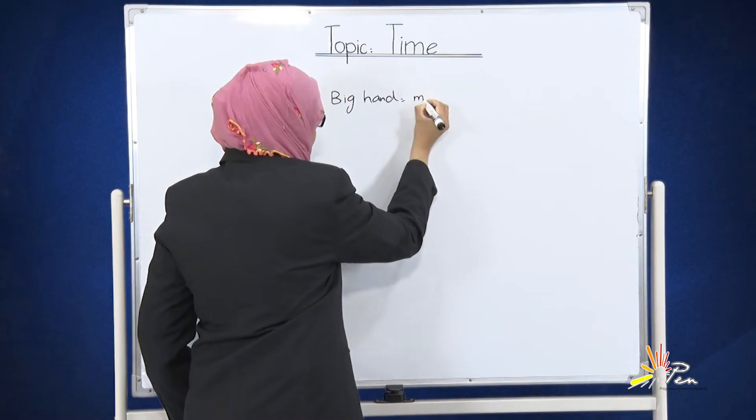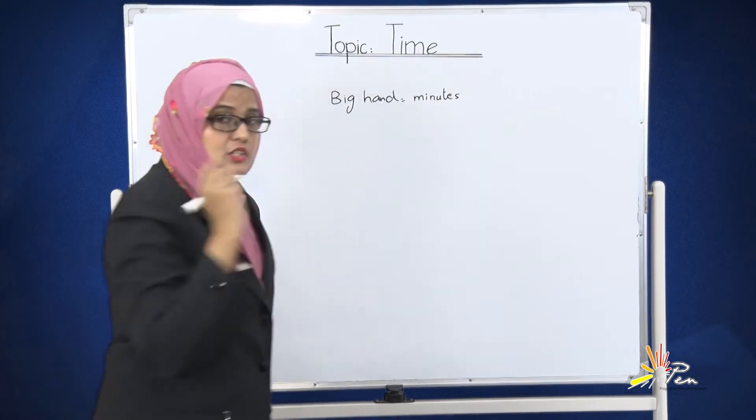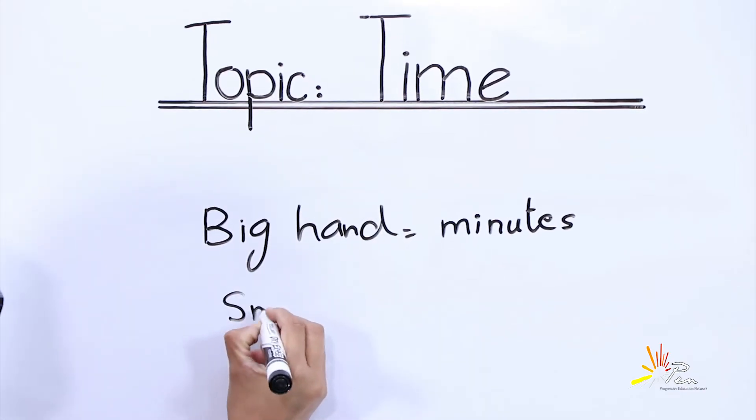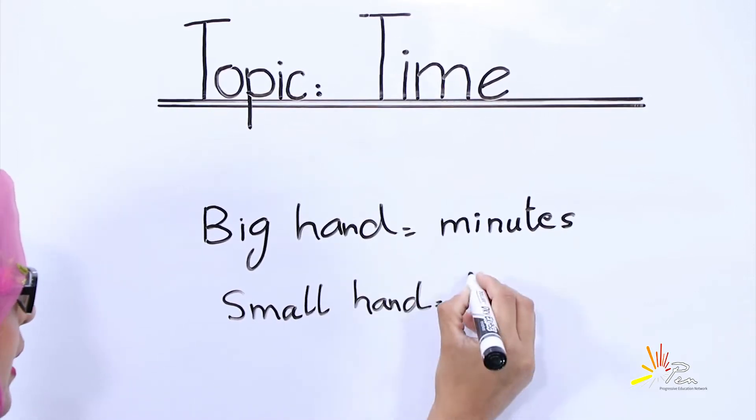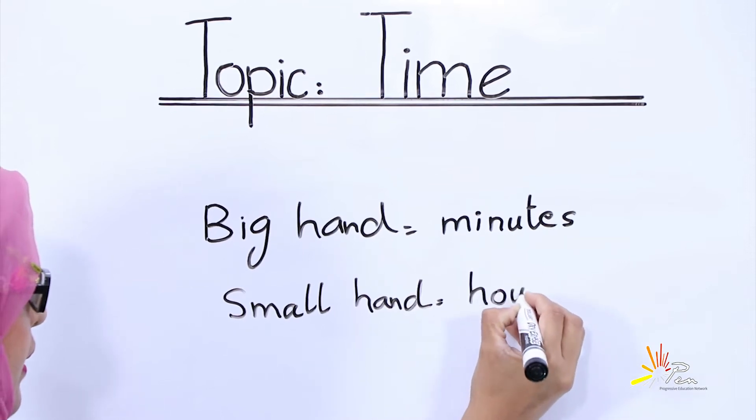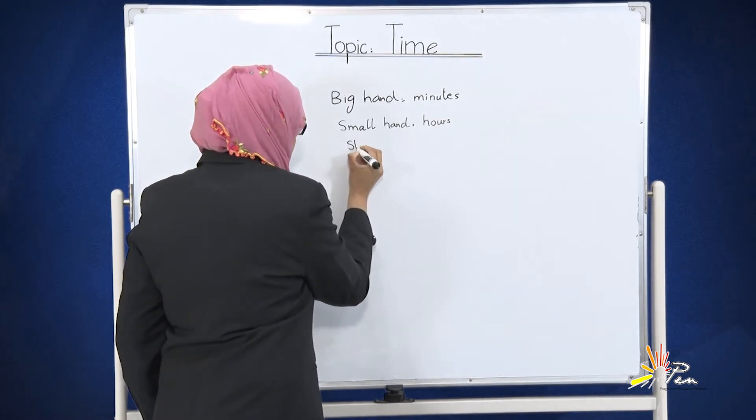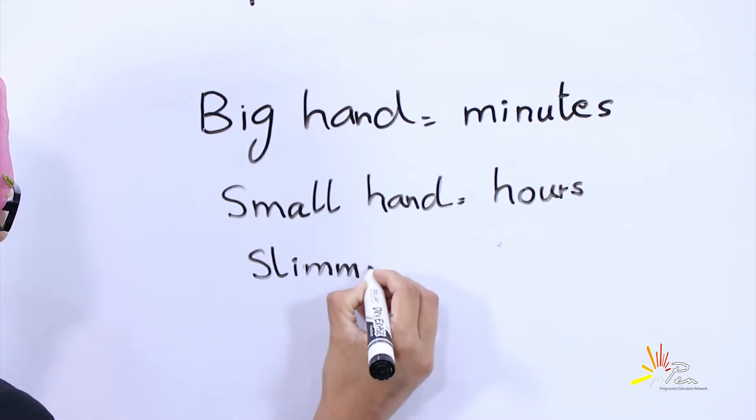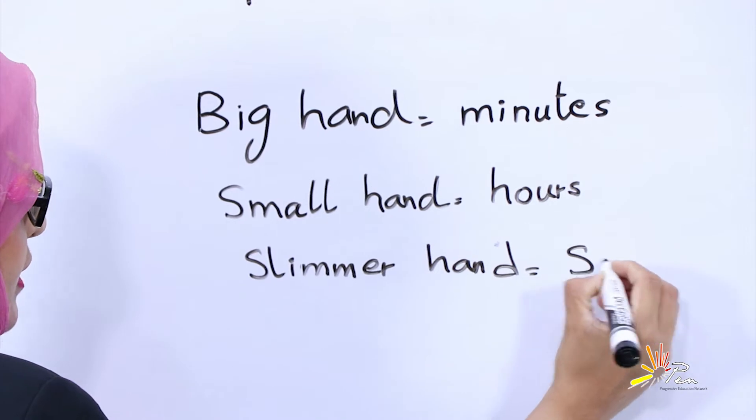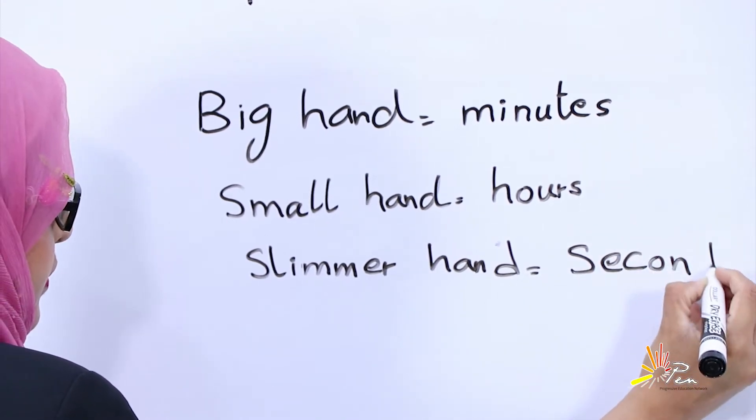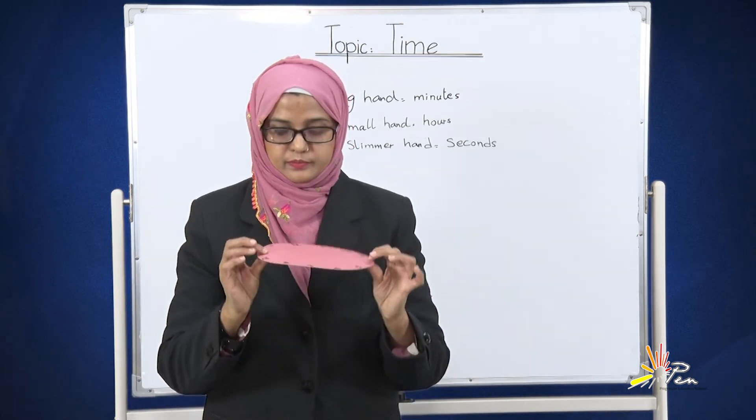And this is one more hand, the slimmer hand. This hand tells us about the seconds. Students will learn that the big hand shows the minutes, the small hand tells us about hours, and the third slimmer hand tells us about seconds.